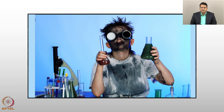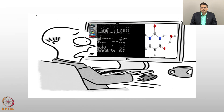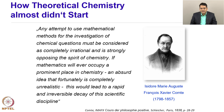Let us come to chemistry. When we think of chemistry, most of us think of chemistry as done in a laboratory. However, in this course, I will show that chemistry can also be done computationally — what you see in this file is actually an ORCA output file. When I tell my colleagues that chemistry can be done like this, they often scoff at me, and this is not new. A French philosopher in 1838 stated that any attempt to use mathematical methods for the investigation of chemical questions must be considered completely irrational and strongly opposing the spirit of chemistry — and that if mathematics ever occupied a prominent place in chemistry, it would lead to a rapid and irreversible decay of this scientific discipline.